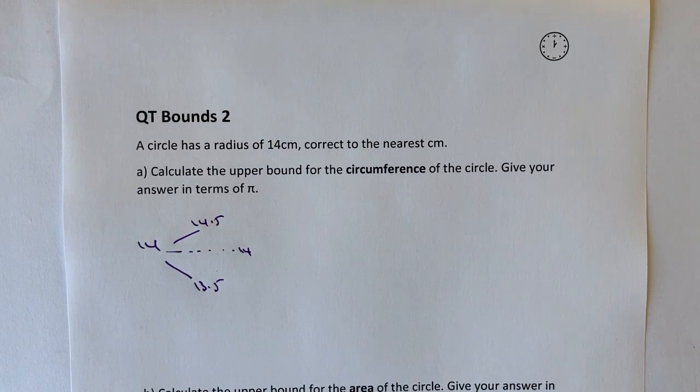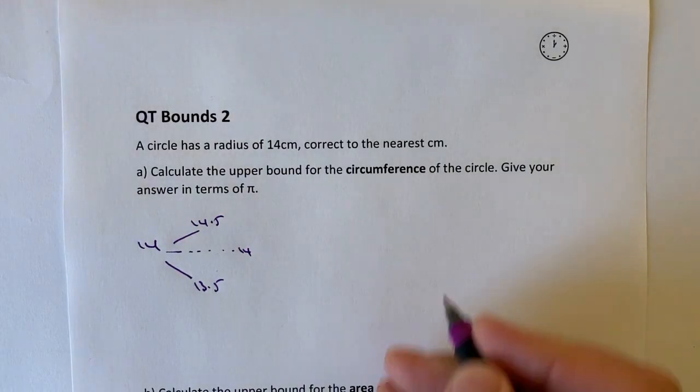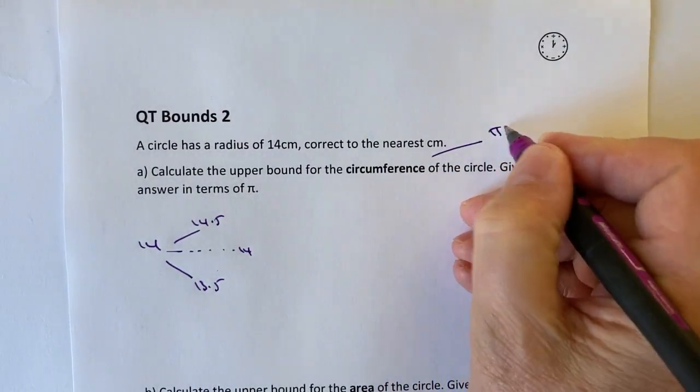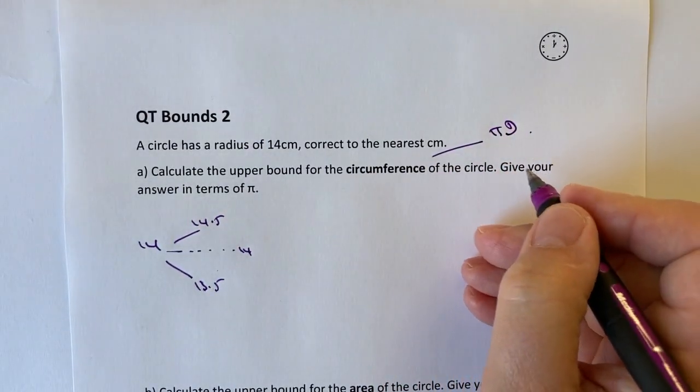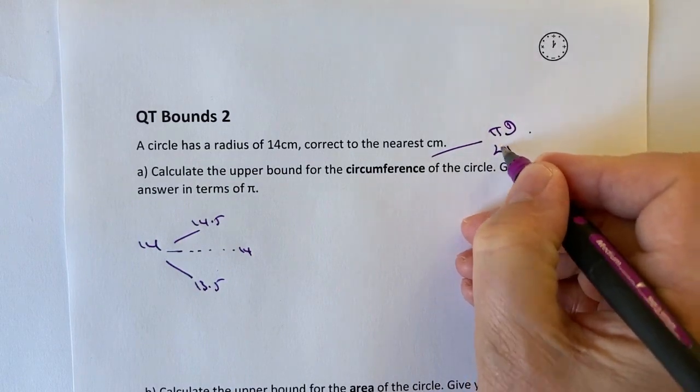So then it says calculate the upper bound for the circumference of the circle. You need to remember your formulas for circumference, and actually in part B, it's the area. So the circumference of a circle, the way I remember it is πD. Some people remember it as 2πR. It doesn't really matter which one you use.